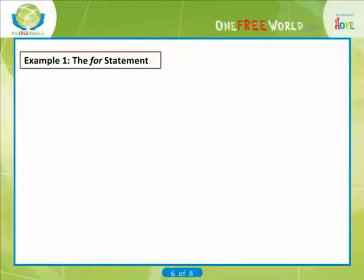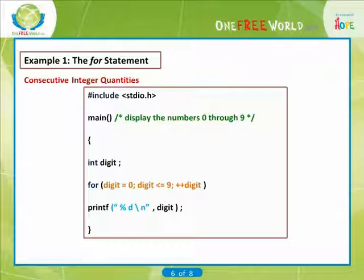Example 1: The for statement. Consecutive integer quantities. Here is another program which does the same thing. Now, however, we will make use of the for statement, rather than the while statement or the do while statement.